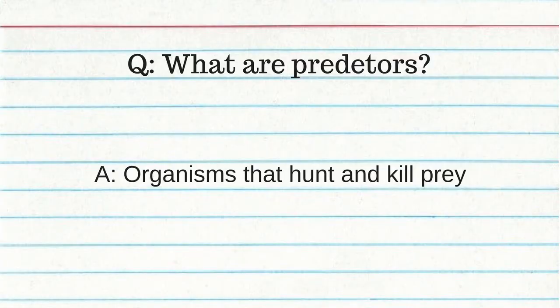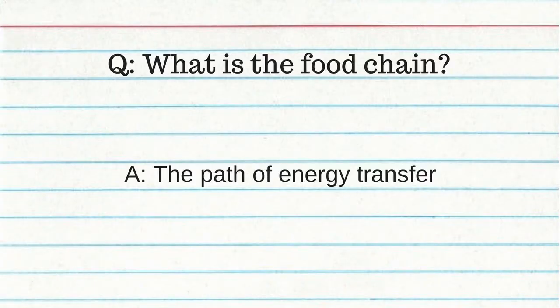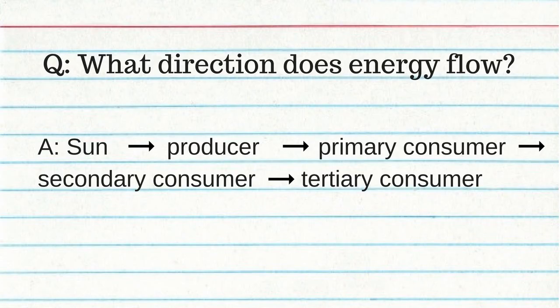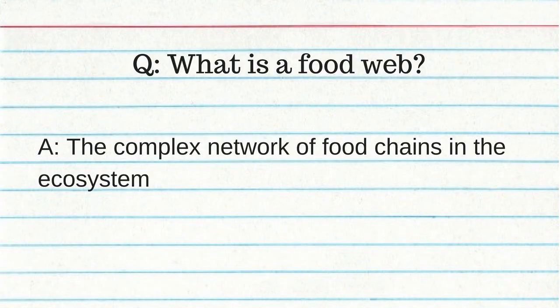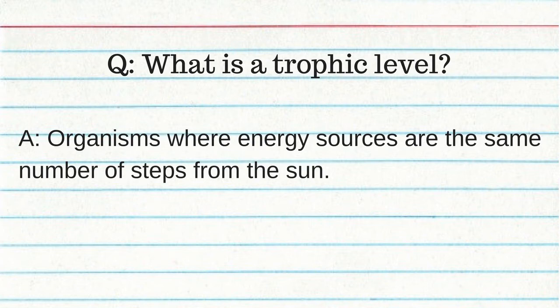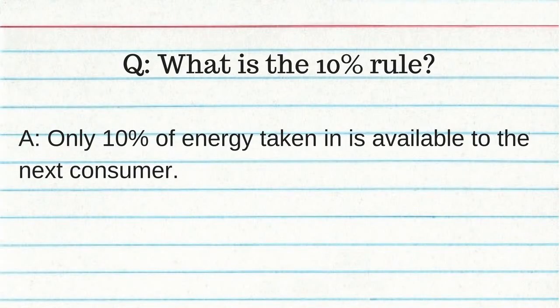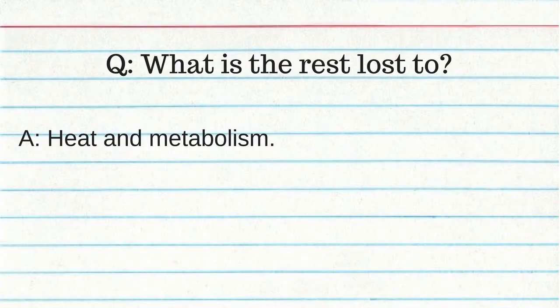What are predators? Organisms that hunt and kill prey. A food chain is the path of energy transfer — from the sun, to the producer, to the primary consumer, to the secondary consumer. A food web is a complex network of food chains in an ecosystem. A trophic level is where organisms' energy sources are the same number of steps away from the sun. The 10% rule: only 10% of energy taken in is available to the next consumer. Energy is not recycled — the rest is lost to heat and metabolism.